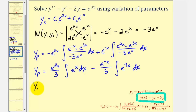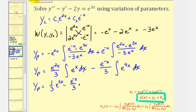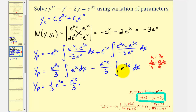So y sub p is equal to: the integral of e to the x is just e to the x, so we'd have one-third e to the two x times e to the x, giving e to the three x. Then we have minus e to the negative x divided by three times this integral, which requires u-substitution where u equals four x, du equals four dx, so dx equals one-fourth du. This integral becomes one-fourth times e to the four x.